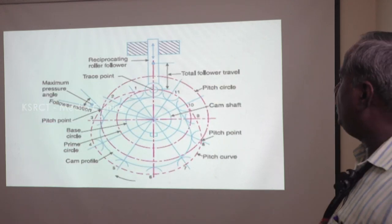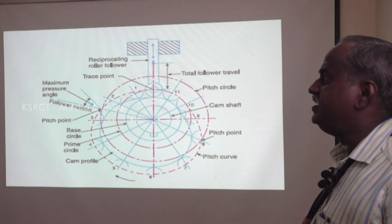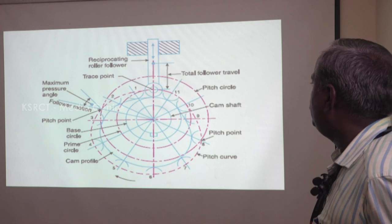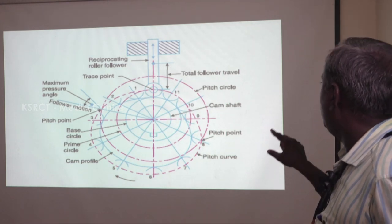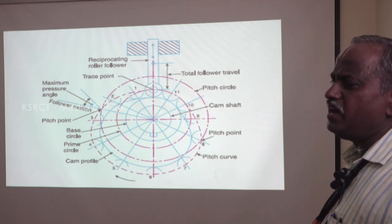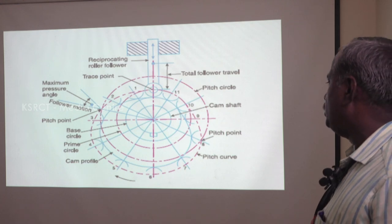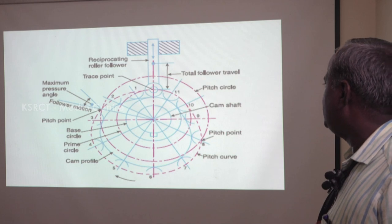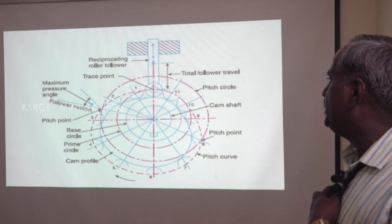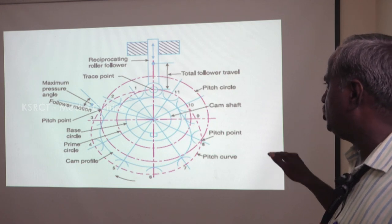This is a CAM profile. There are certain nomenclatures you should know before going for a CAM design. The blue circles represent the profile of the CAM. The first and innermost one is the CAM shaft, which drives the CAM. The second immediate profile is the base circle — that is the minimum radius available on the CAM. The third one is the CAM profile, which is not uniform. Whenever the follower is at the base circle with no change in shape, there will be no actuation — this is called the dwell period, where the CAM follower will have no upward or downward motion.